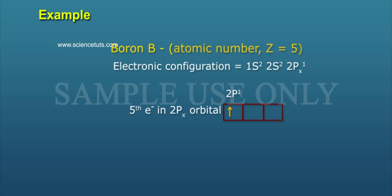Example: Boron B, atomic number Z equals 5. Electronic configuration equals 1s² 2s² 2px¹. The fifth electron enters the 2px orbital.